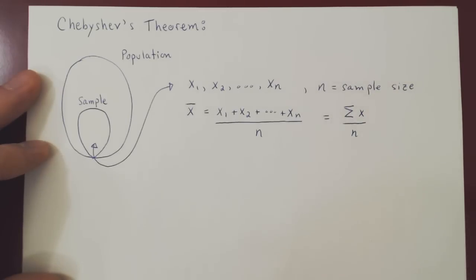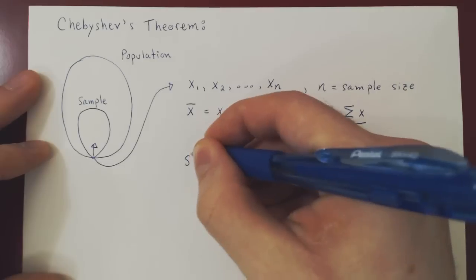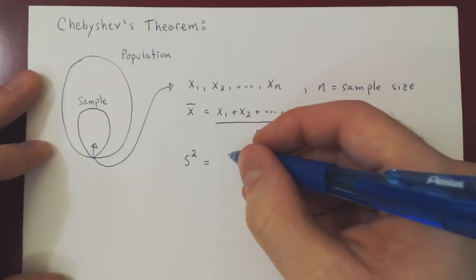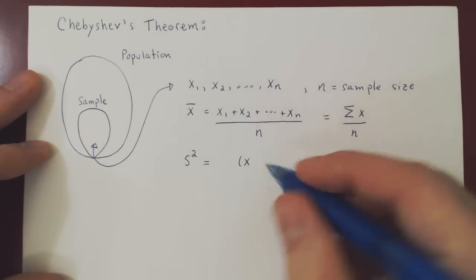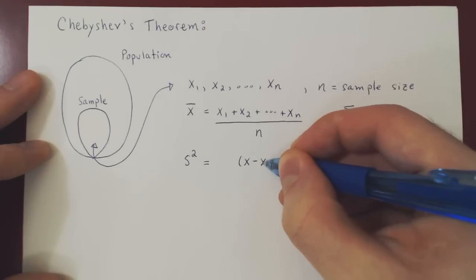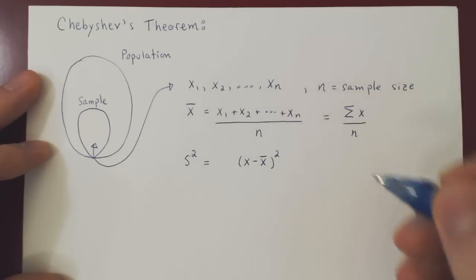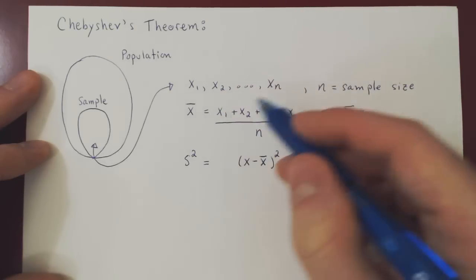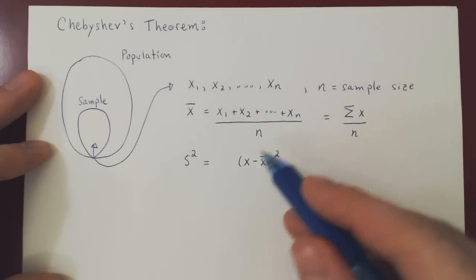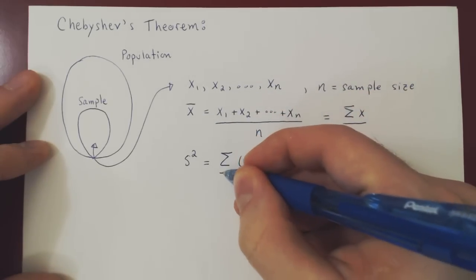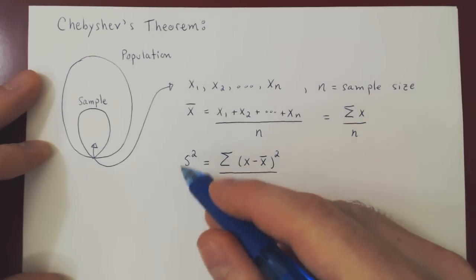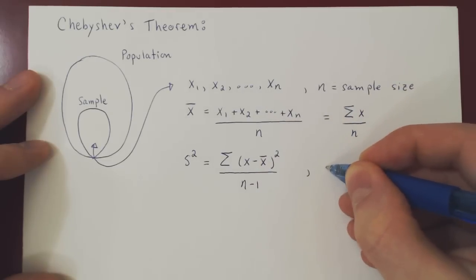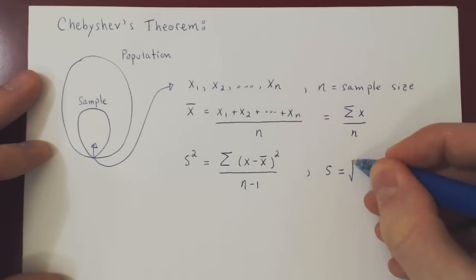We also need the sample standard deviation. First, find the sample variance: take each value x₁ through xₙ, subtract the average, square this, and add all of those — so (x₁ − x̄)² + (x₂ − x̄)² + … + (xₙ − x̄)². We have to be careful: we do not divide the sample variance by n, but by n − 1. Once we have the sample variance, the sample standard deviation is simply the square root of the variance.